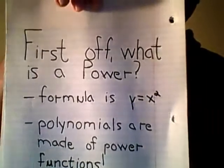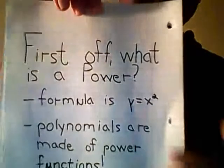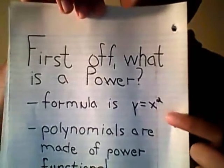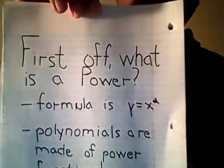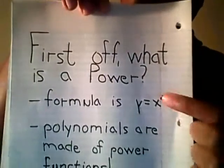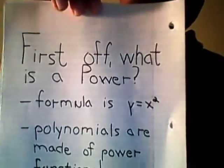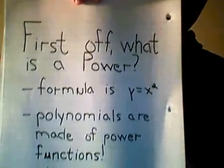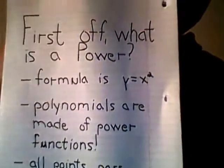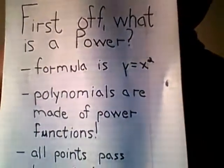First off, the formula for a power function is y equals x to a variable, so if you've got common sense, just know not to put two and put something like n or h or something like that. Also, polynomials are made of power functions. That's important.